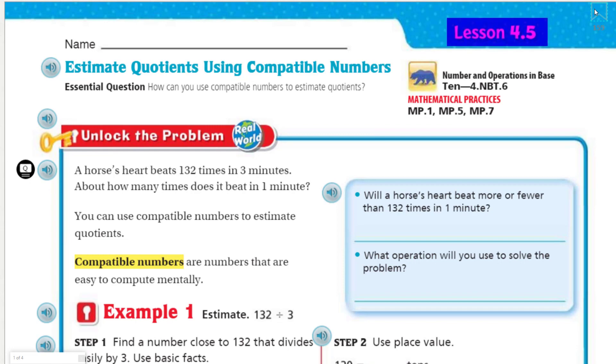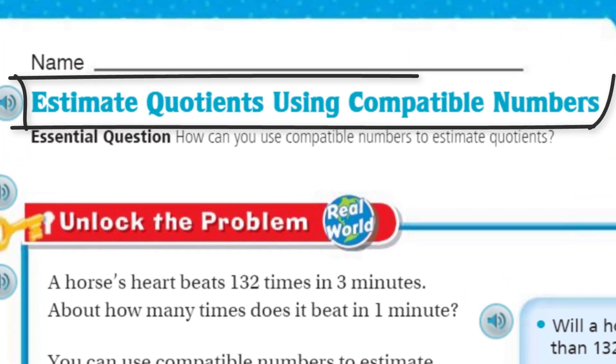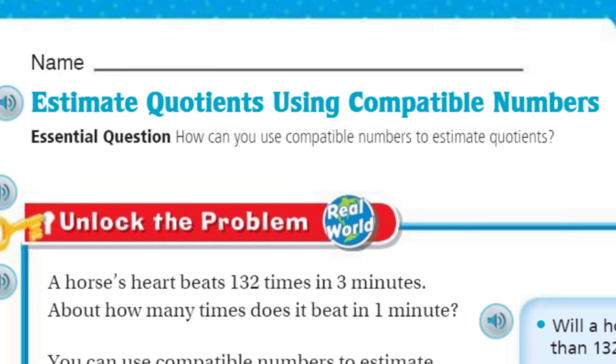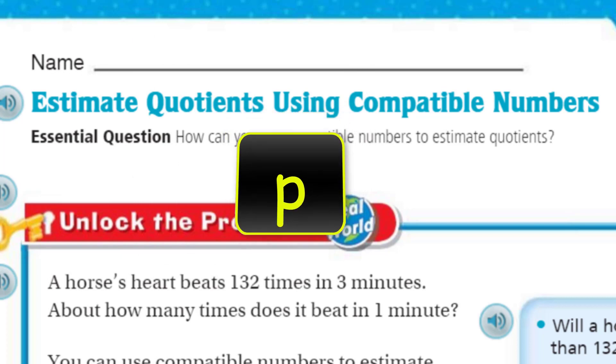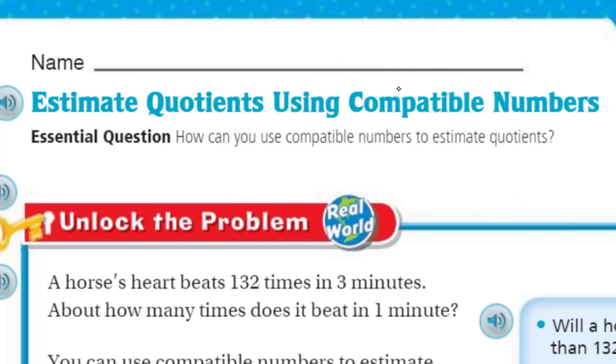We have lesson 4.5 in front of us. Yeah, look at our topic. Estimate quotients using compatible numbers. Ooh, sounds like that might be a challenge. Estimate, we know about estimate, right? It's all about making that best guess at maybe a number. We just find the about number I sometimes refer to it as. We also have quotients, which we know is the answer to a division problem. Compatible. I love the word compatible. It's when people get along. When people are compatible, it means that they get along easy.